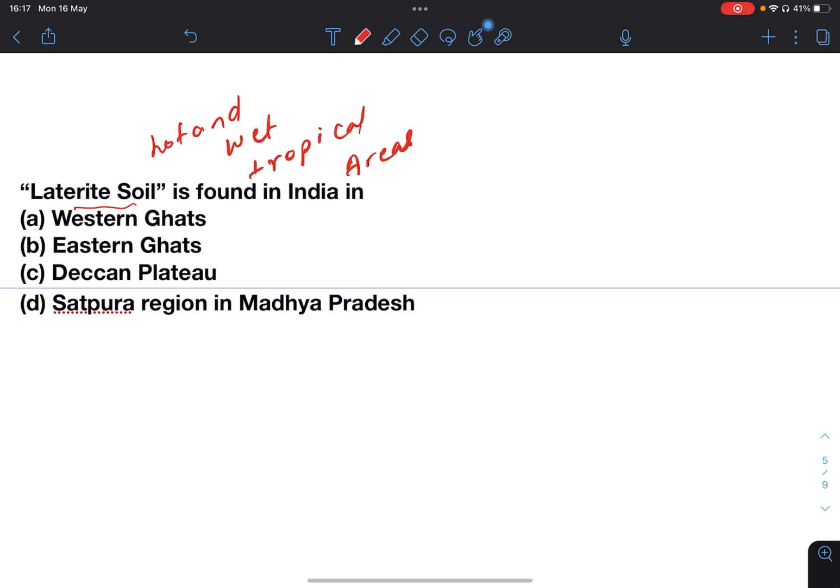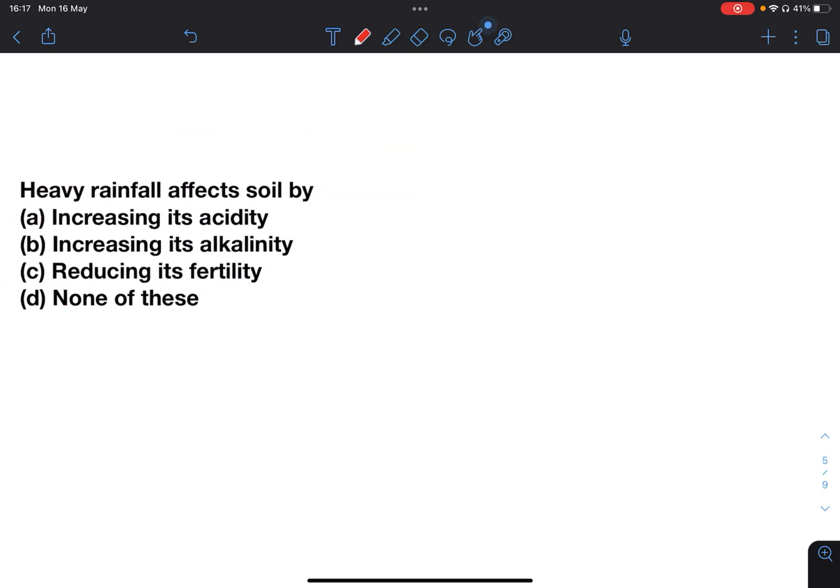Heavy rainfall affects soil by increasing its acidity, increasing its alkalinity, reducing its fertility, or none of these. This is a simple question but also confusing, because when soil is formed under conditions of heavy rainfall, the soil is acidic. But heavy rainfall also removes the finer top soil and causes leaching, hence reduces its fertility. Answer here will be C, reducing its fertility. You can post your answer in the comment section and we can discuss that.